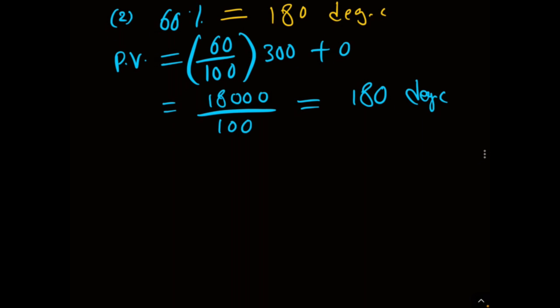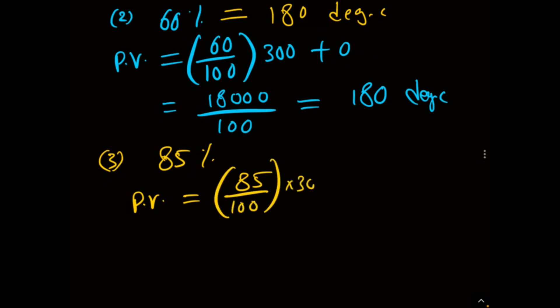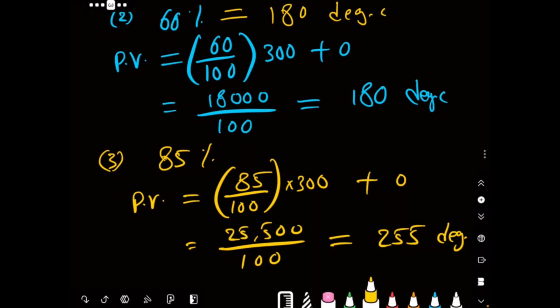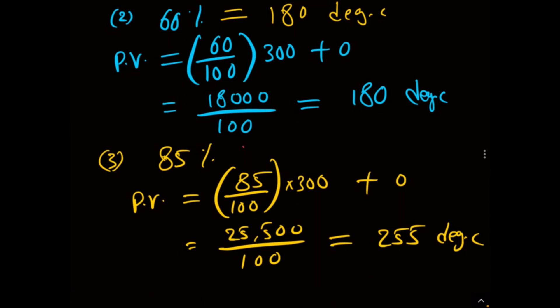Case 3: when my output is 85%, what is the equivalent PV? PV equals 85 divided by 100, multiplied by span 300, plus LRV which is 0. So 85 multiplied by 300 equals 25,500, divided by 100, equals 255 degrees centigrade. When my transmitter output is 85%, the equivalent PV is 255 degrees centigrade.